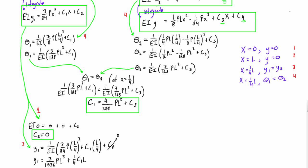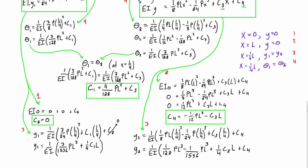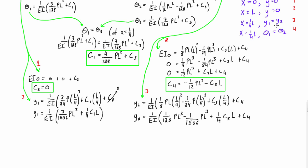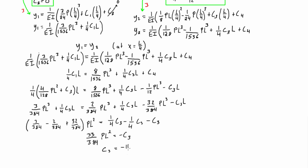So we find out that C2 is going to be equal to 0. And then we're going to be able to throw in boundary conditions 2 and 3 into this expression. So we get an expression for C4, and then also because we're dealing with at x equals 1 quarter L, y1 is equal to y2. So then we can set these equal to each other and find an expression for C3, which is negative 11 over 128 PL squared.